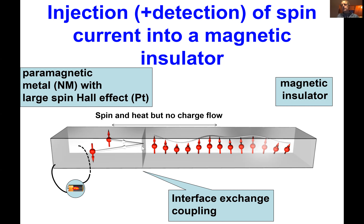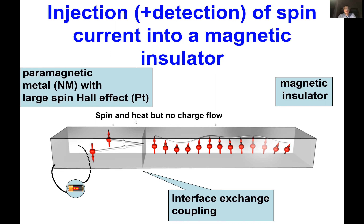Five percent of the charge current is converted into transverse spin current, but at the interface, spin is conserved — it's 100% efficient per spin. You then average over all such processes, which leads to a finite spin resistance. Spin can also be lost in the bulk of the insulator due to relaxation processes. I'll come back to this when I discuss the experiments, which will give an easier picture.